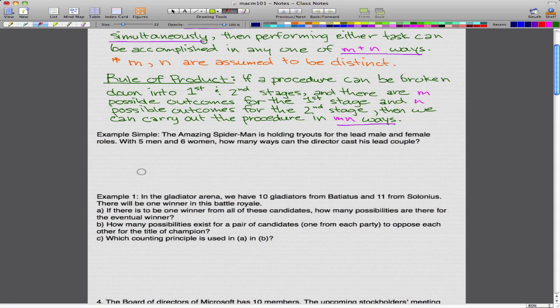It's really simple here, and this shows the rule of product. It's pretty much just 5 times 6, and that's 30. So there's 30 ways that the director can cast his lead couple.